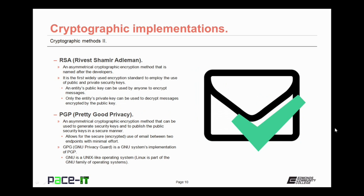RSA is an asymmetrical cryptographic encryption method named after its developers. It is the first widely used encryption standard to employ public and private security keys. An entity's public key can be used by anyone to encrypt messages, but only the entity's private key can be used to decrypt messages encrypted by the public key.